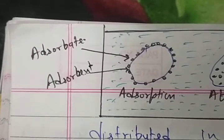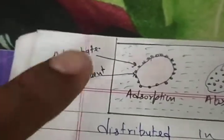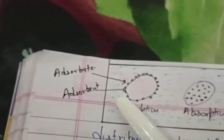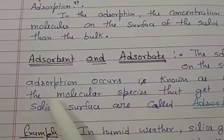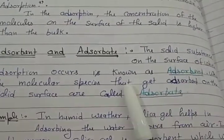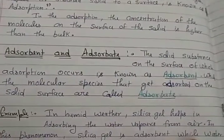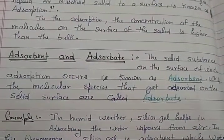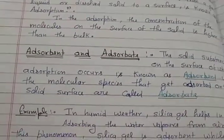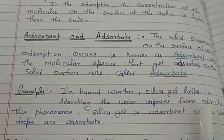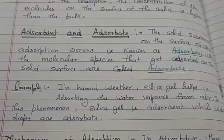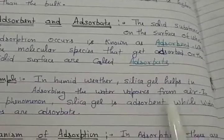The substance on whose surface adsorption occurs is called the adsorbent. The molecular species that are adsorbed on the solid surface are called adsorbate. In humid weather, silica gel helps in absorbing water vapors from air. In this phenomenon, silica gel is the adsorbent because it adsorbs water on its surface, while water drops are the adsorbate.